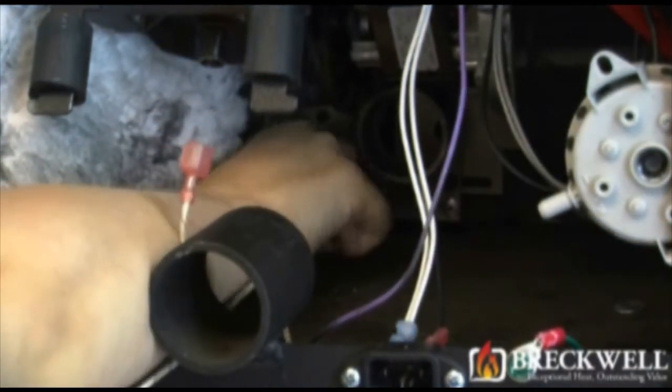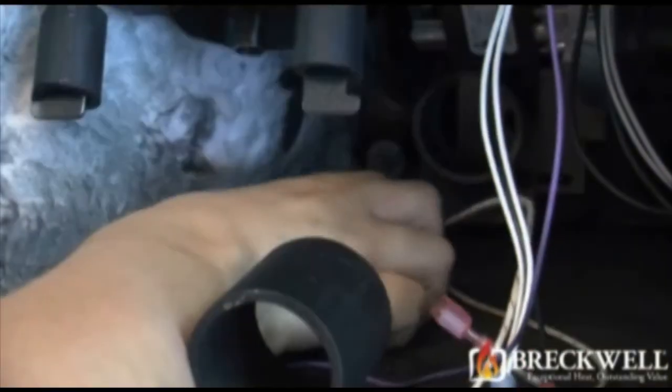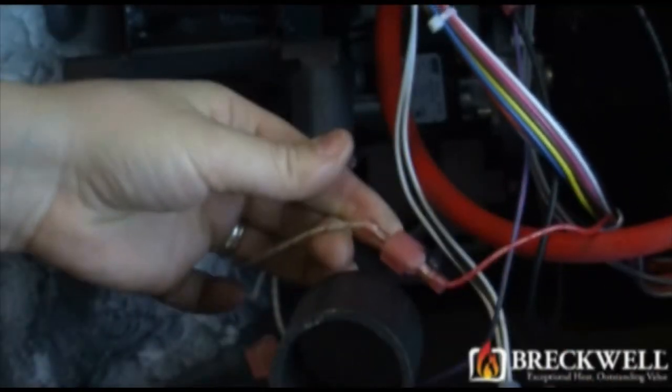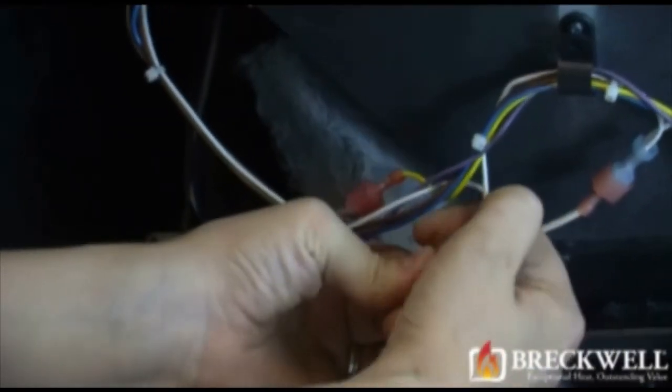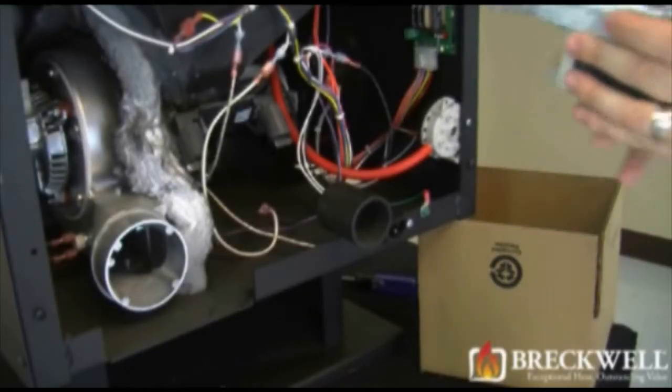Then insert the igniter housing and the igniter module back into its proper hole in the back side of the stove. Replace the two bolts and tighten securely with your nut driver. Once secure, be sure to reconnect the two wire leads from the igniter back to the wiring harness.